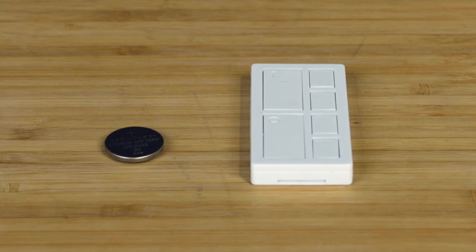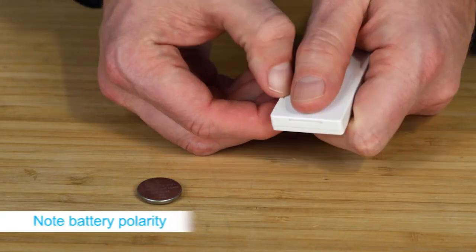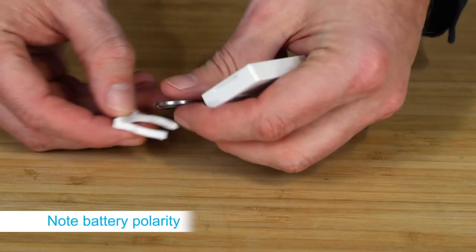A CR2032 battery is included to power the remote. Remove the battery drawer from the remote, insert the battery, and replace the drawer.